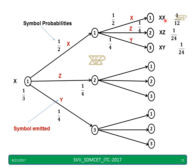The total probability of the sequence xx from this path is found by multiplying: 1 by 3 (initial state probability) × 1 by 2 × 1 by 2 = 1 by 12. For sequences xz and xy, multiply 1 by 3 × 1 by 2 × 1 by 4 to get 1 by 24.